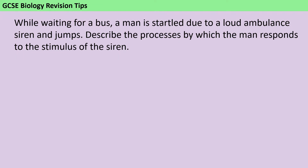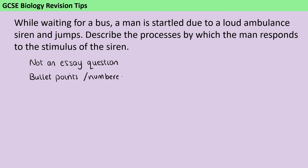Today's question comes from the homeostasis topic of GCSE Biology Paper 2. Before you write your answer, don't forget this is not an essay question, even if it looks like one, so you don't get credit for writing in paragraphs or even full sentences. It's a much better idea to lay your answer out with bullet points or a numbered list, and you should try to include just one credit-worthy idea per bullet point, because this makes it really easy for your examiner to follow your train of thought and to give you credit for your ideas.